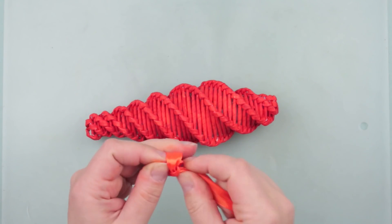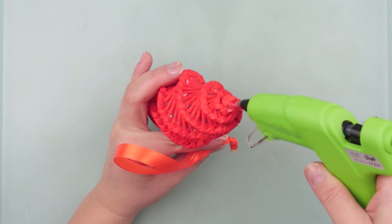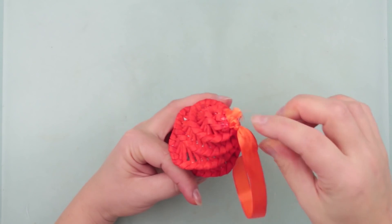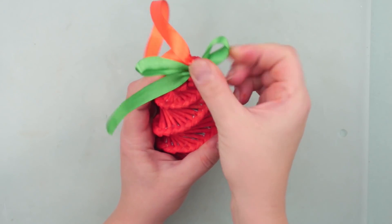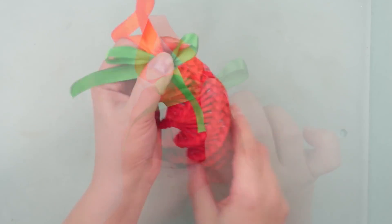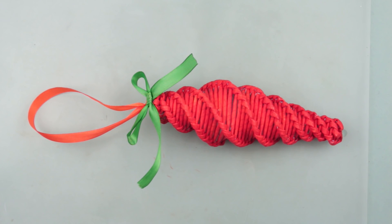Make a ribbon loop to hang the carrot onto the tree. Add some glue on top. Glue the loop and press down. Make a small bow using a green ribbon and glue it to the decoration. A bright woven paper carrot ornament is ready to decorate your Christmas tree for the holiday.